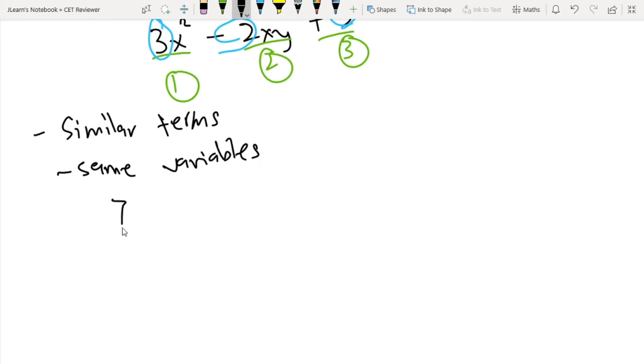So for example, 7x²y and 6x²y, similar terms yan kasi parehas sila na yung variables nila x²y. Pero kunyari 3x² and negative 2x - ito hindi sila similar kasi ito x² ito x lang. So kailangan pati yung degree parehas.